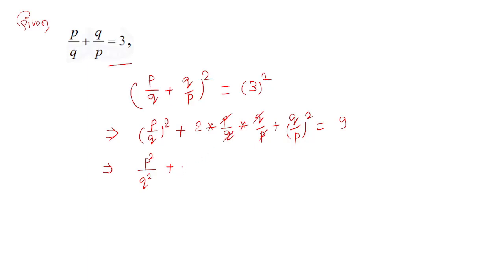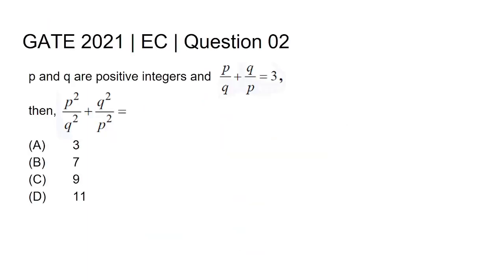So p²/q² + 2 + q²/p² = 9. Hence p²/q² + q²/p² = 9 - 2 = 7. This is our answer. The answer to this particular question is option B, 7.